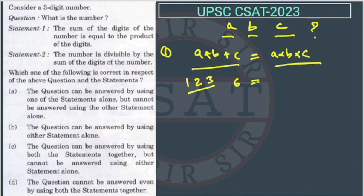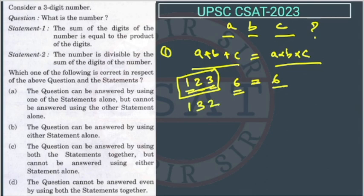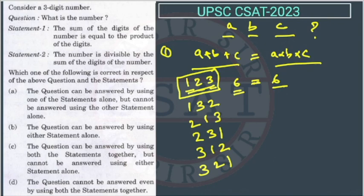Even though we know the digits are 1, 2, and 3, how many numbers can we form using these three digits? We can form six numbers: 123, 132, 213, 231, 312, and 321. So by using Statement 1 alone, we cannot find the unique number.